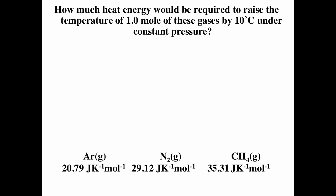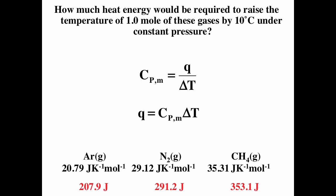How much heat energy is required to raise one mole of a gas by 10 degrees under constant pressure? For argon, nitrogen, and methane: the more places heat can go, the higher the heat capacity, and the more heat you need for the same temperature change. Heat capacity is the ratio between heat and change in temperature, so Q = C × ΔT. For a 10-degree change, argon requires 207.9 J while methane requires 253.1 J — more modes means higher heat capacity and more heat needed.